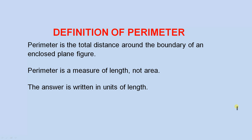Definition of perimeter. Perimeter is the total distance around the boundary of an enclosed plane figure. Perimeter is a measure of length, not area. It's a very important thing to remember. The answer is written in units of length.